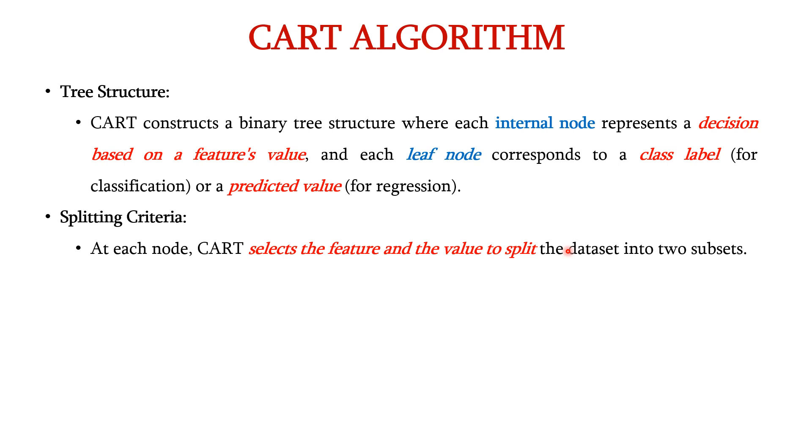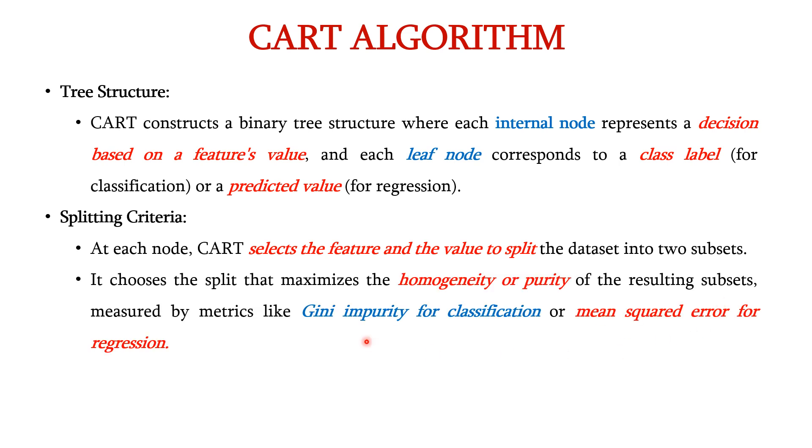While splitting the nodes, at each node, CART selects the feature and the value to split the dataset into two subsets. It chooses the split that maximizes the homogeneity or purity of the resulting subsets, which is measured by metrics like Gini impurity for classification or mean squared error for regression.